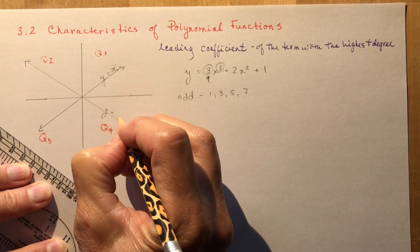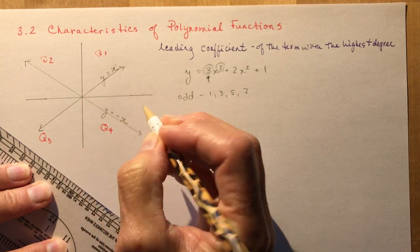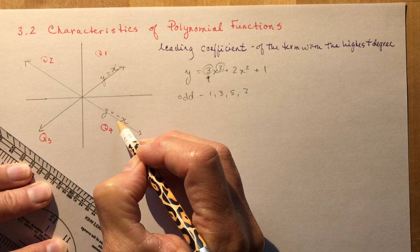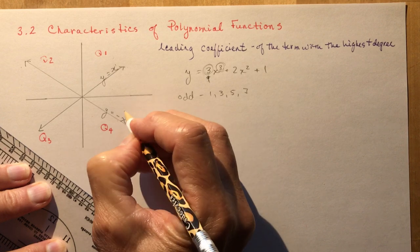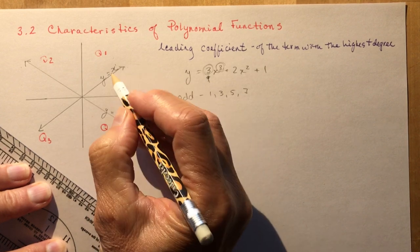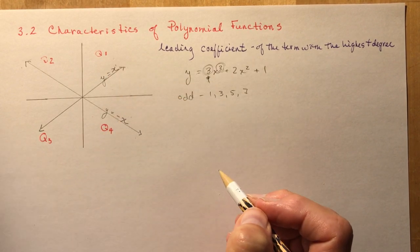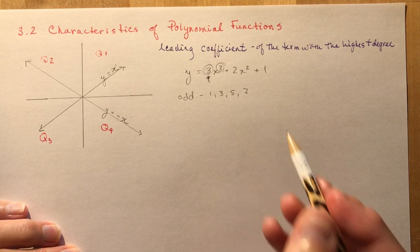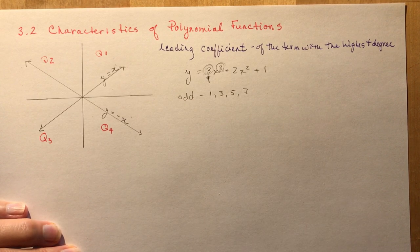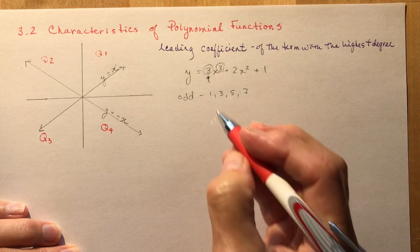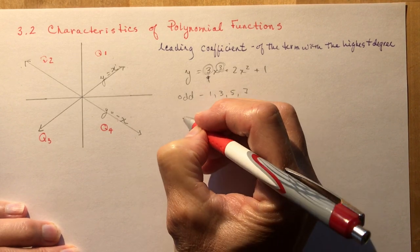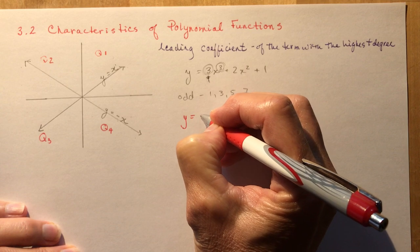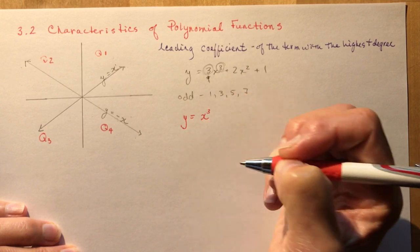That would be like y = −x, going from quadrant 2 to quadrant 4. So this is your negative leading coefficient, this is your positive leading coefficient. Now, if you change the degree of the function — we're going to deal with a cubic function now, so let's start with the most basic: y = x³.